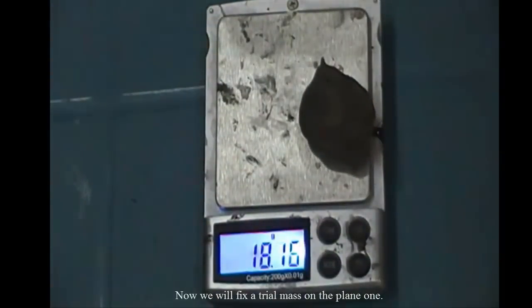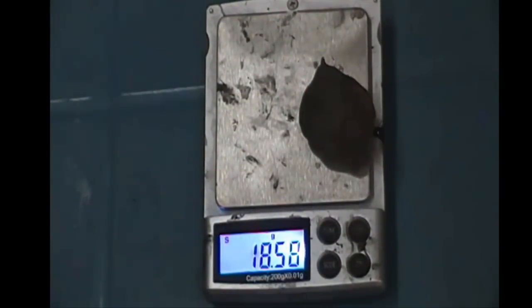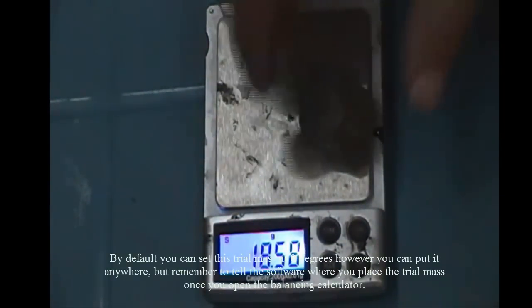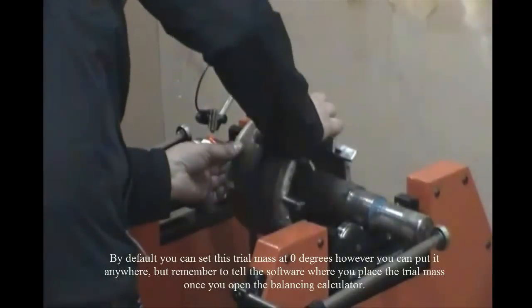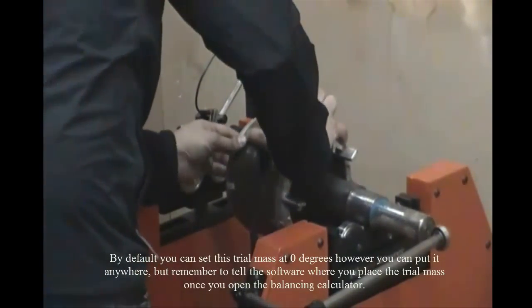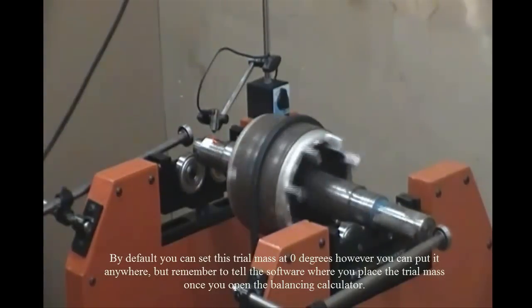Now we will fix a trial mass on the plane 1. By default you can set this trial mass at 0 degrees, however you can put it anywhere, but remember to tell the software where you place the trial mass once you open the balancing calculator.